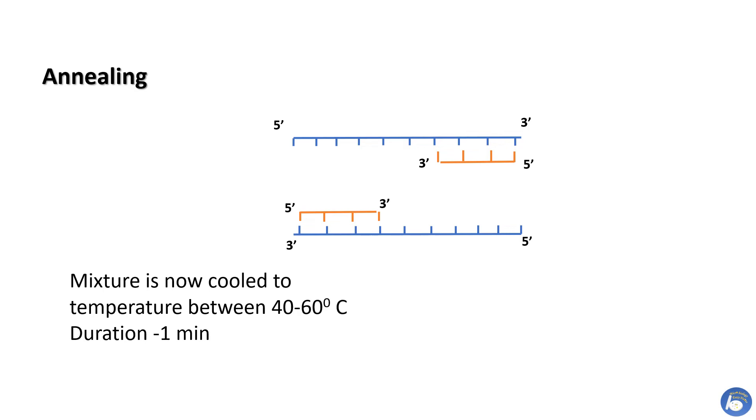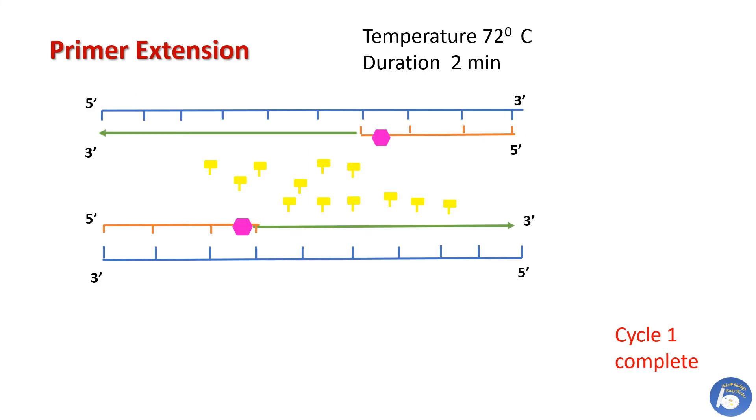The third step is primer extension. At this step, temperature is raised to 72 degrees Celsius for at least two minutes. Taq DNA polymerase starts adding complementary DNTPs to the three prime end of the primer.